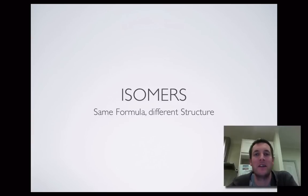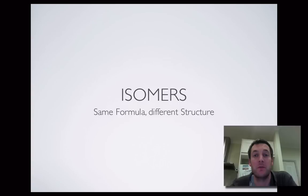This is a screencast about isomers. Isomers are molecules that have the same formula but different structures. If you've managed to watch the film Nomenclature 1 before this, it would be helpful because we're going to talk about some of the names of the molecules we look at in here. So if you haven't seen that one yet, maybe watch that before you watch this.